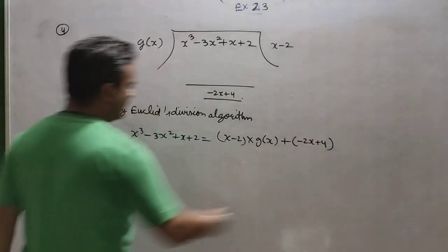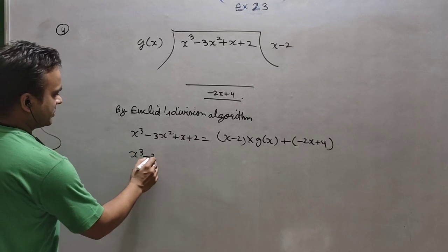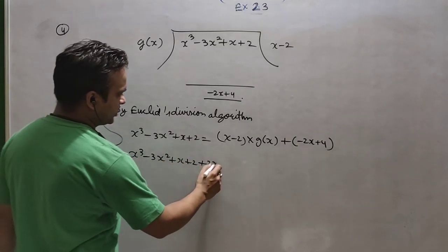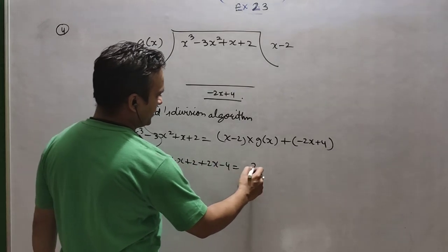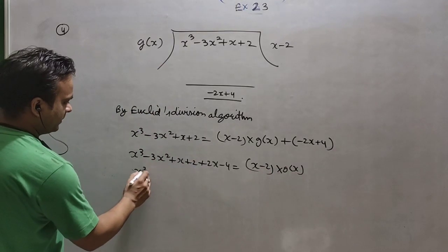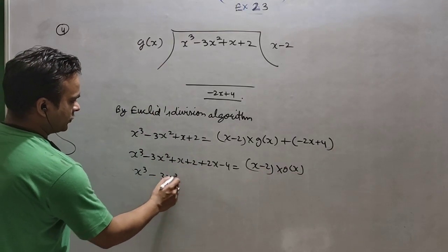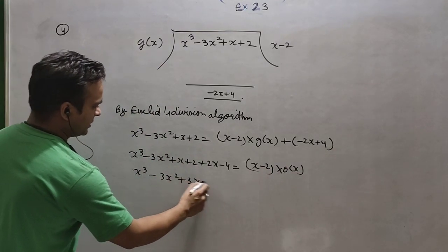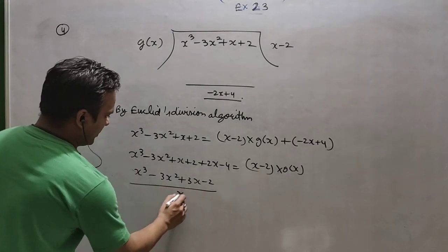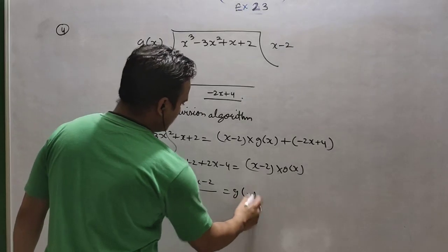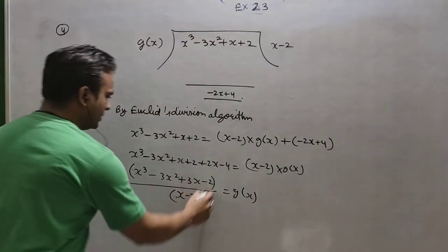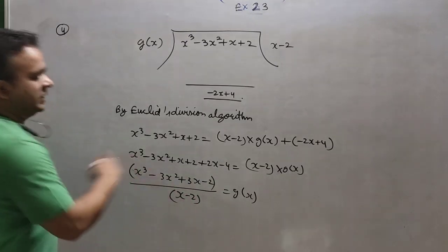What I will do is shift the remainder here. x cubed minus 3x squared plus x plus 2 — it becomes plus 2x and minus 4. And x minus 2, I am putting here first — we will simplify it. So we are getting 3x minus 2 here; this x minus 2 will come and divide.